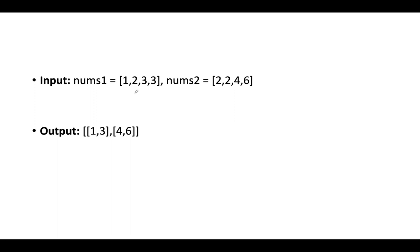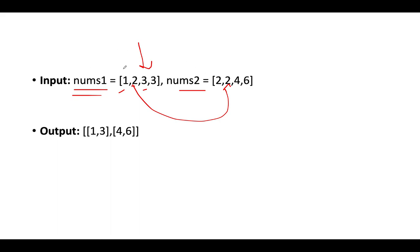We have nums1 as [1, 2, 3, 3] and nums2 as [2, 2, 4, 6]. We need to identify all elements in nums1 not present in nums2. Two is common in both, so the first element of our answer contains only one and three, since those are not present in nums2. To do this, first transform the input into a set to remove duplicates — set one becomes {1, 2, 3}.